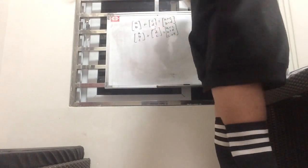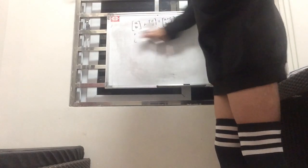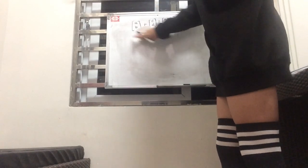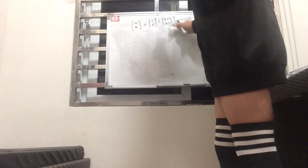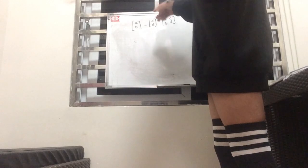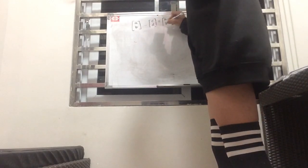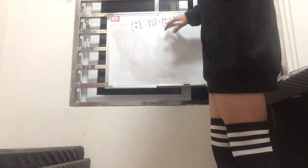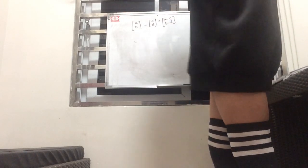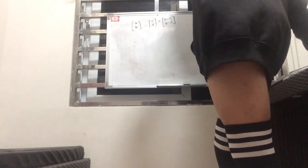For subtraction, it's pretty much the same thing except you subtract them. So vector AB minus vector CD equals the vector (A minus C, B minus D). And the same thing with multiplication — you just multiply the corresponding components.